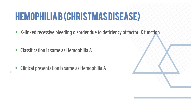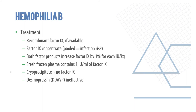Clinical presentation of hemophilia B is the same as hemophilia A. Some patients can also have an inhibitor to factor 9, which occurs in less than 2% of patients. Treatment is factor 9 concentrates; each IU/kg of factor 9 increases the level by 1%. Fresh frozen plasma can also be given; however, desmopressin is not effective in hemophilia B. Importantly, cryoprecipitate does not contain factor 9, so it should not be used in hemophilia B.